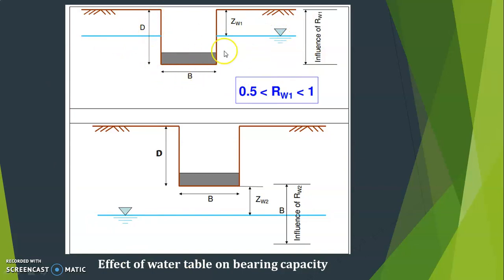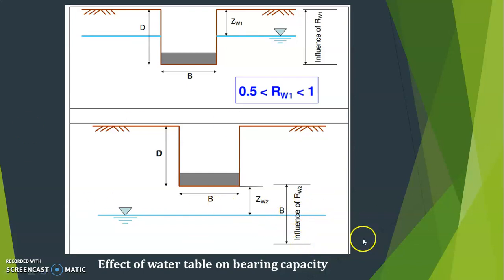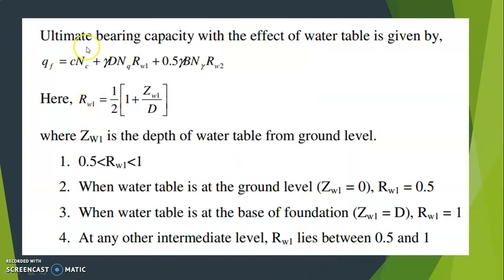There are two conditions. In the first, the water table is above the foundation level, located at a depth z_w1 from the ground level, and you apply reduction factor R_w1. In the second condition, the water table is below the foundation level at a distance z_w2 below the base, and you apply reduction factor R_w2. The ultimate bearing capacity with water table effect is: q_ult = c N_c + γ D N_q R_w1 + 0.5 γ B N_γ R_w2.